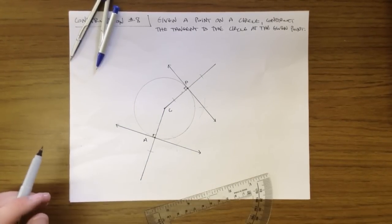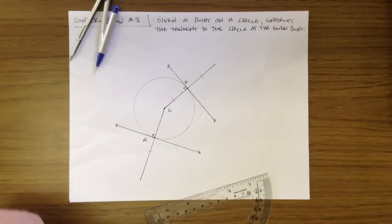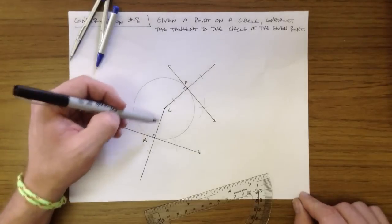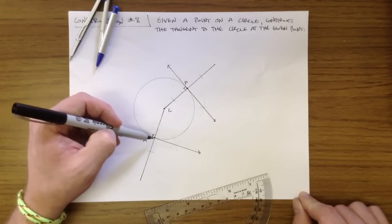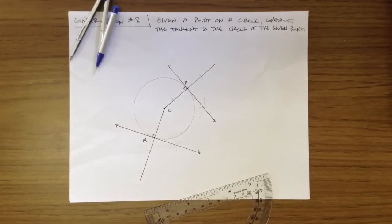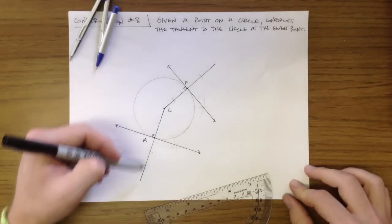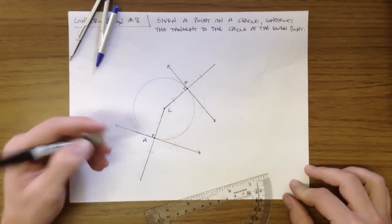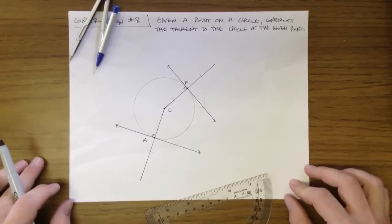So again, the idea is that the radius drawn to a point of tangency is perpendicular to your tangent, so we're just drawing perpendicular lines, but first we need to create a line that goes from the center through the point of tangency and go from there.